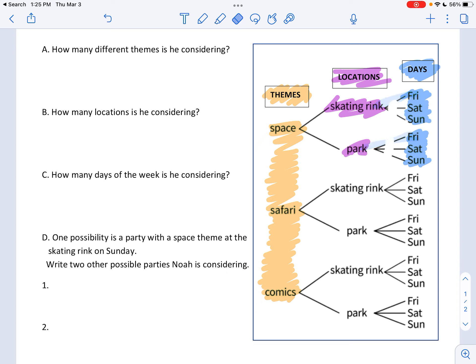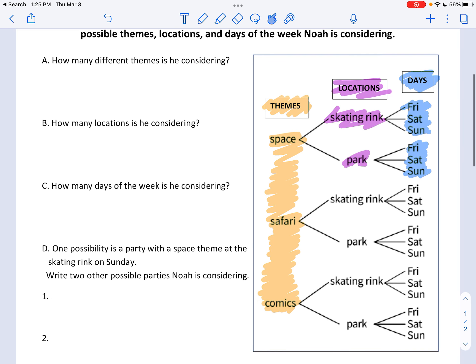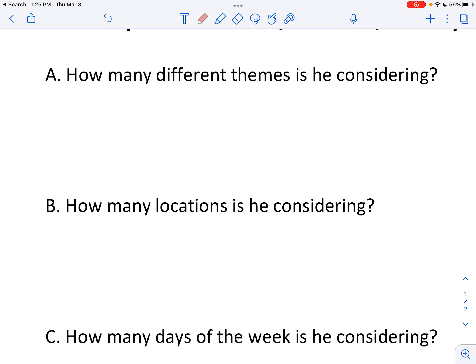Okay, so I wanted to make sure you knew how to read this. So let's jump into A. How many different themes is he considering? So I'm going to undo locations and days. Take a look under themes. There's space, safari, and comics. So how many different themes? Three. Space, safari, and comics.